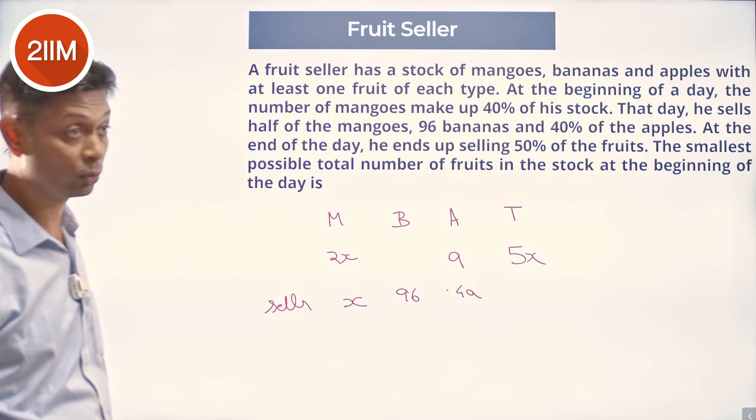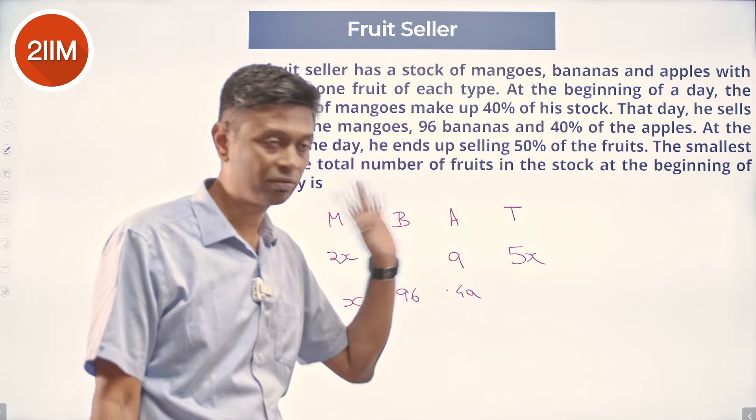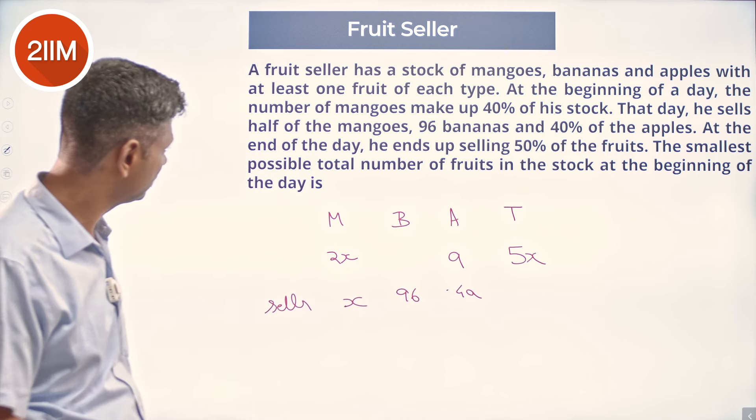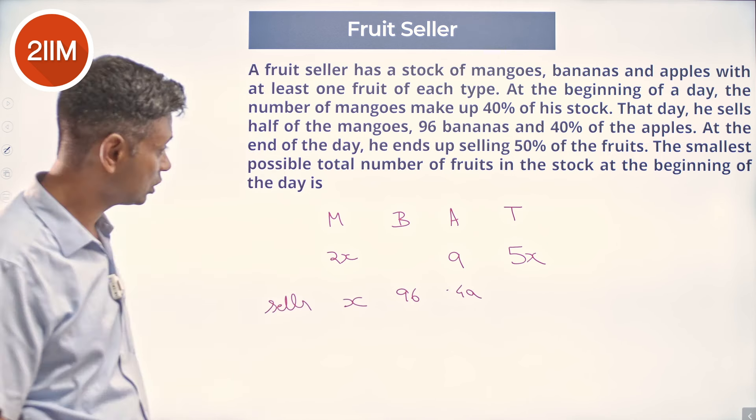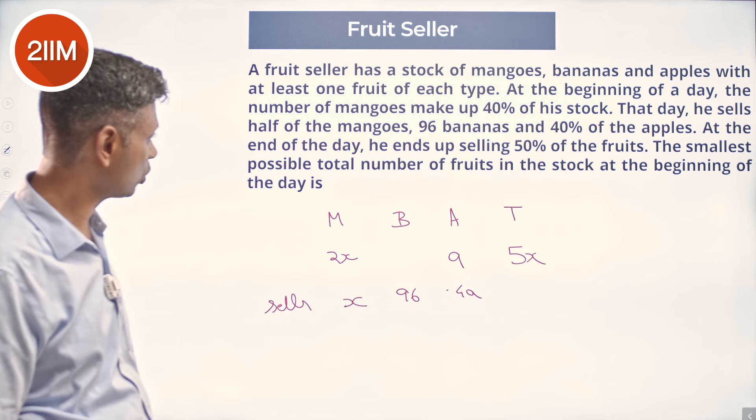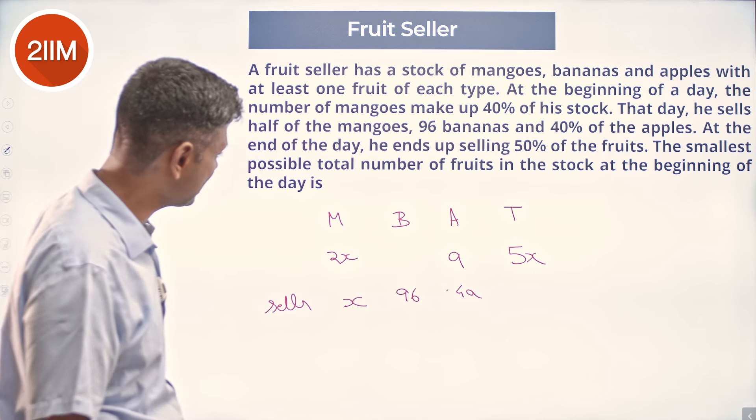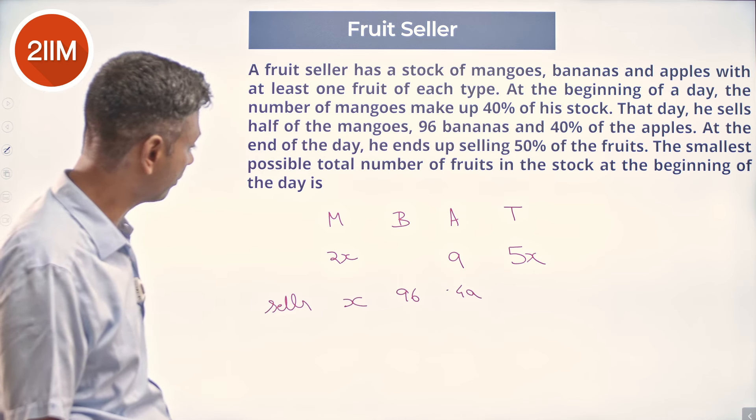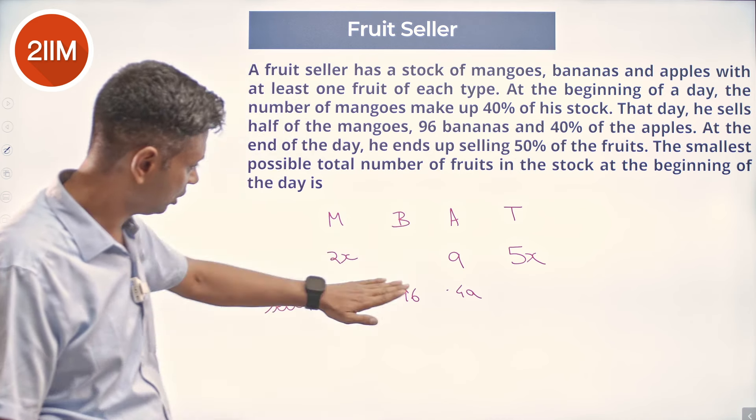He ends up selling 50% of the fruits, so this number is 50% of 5x. So x plus 96 plus 0.4a equals 50% of 5x, which is the smallest possible total number of fruits in the stock. He's selling half of the mangoes and 40% of the apples.